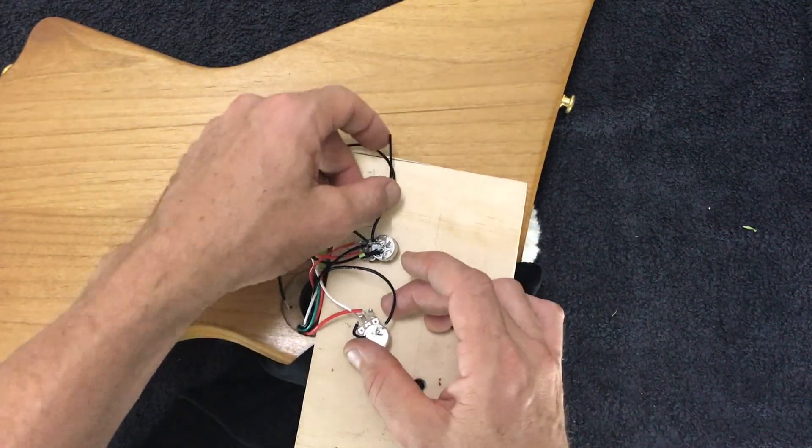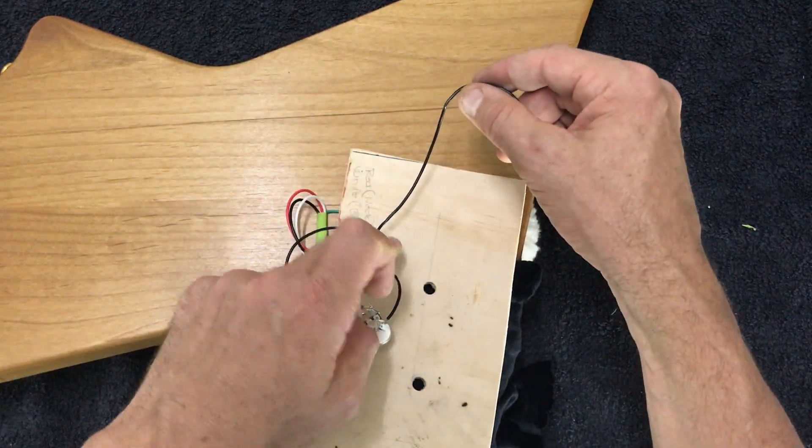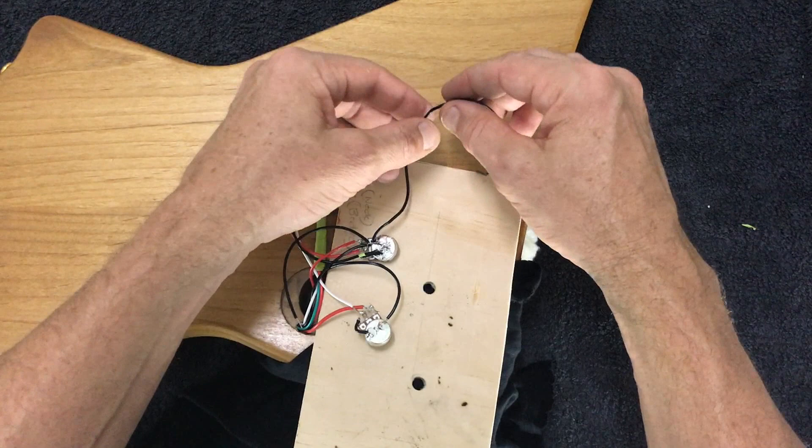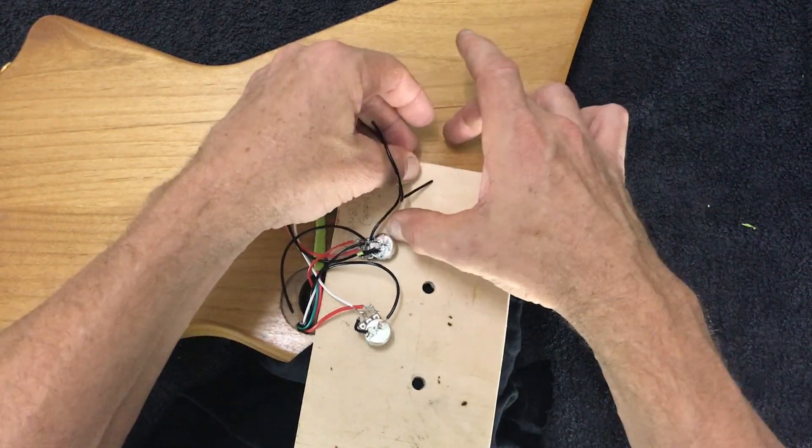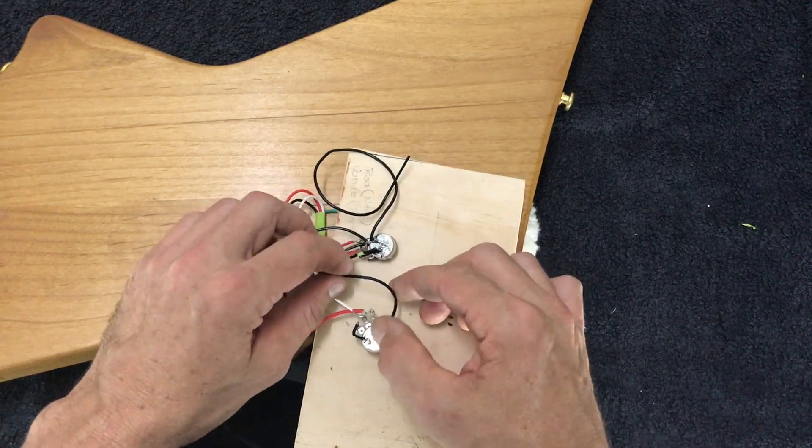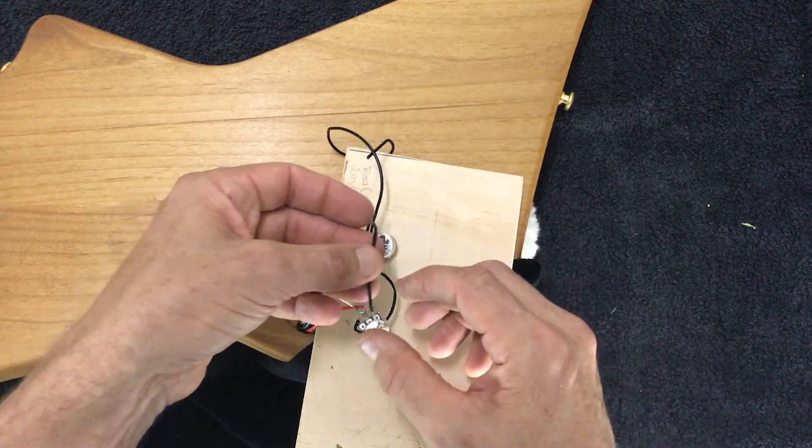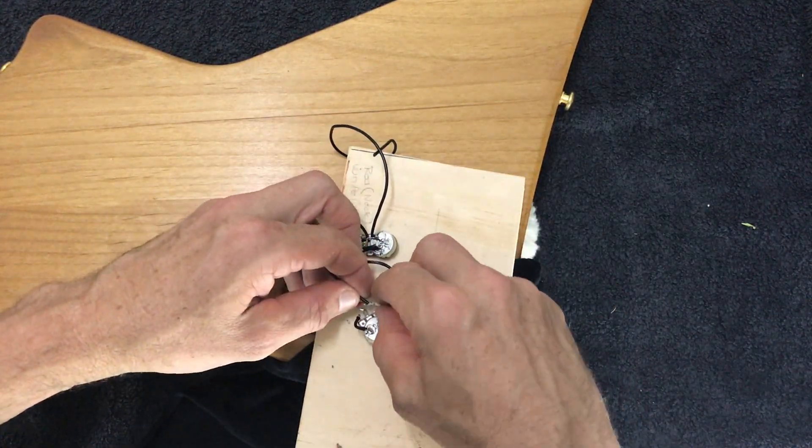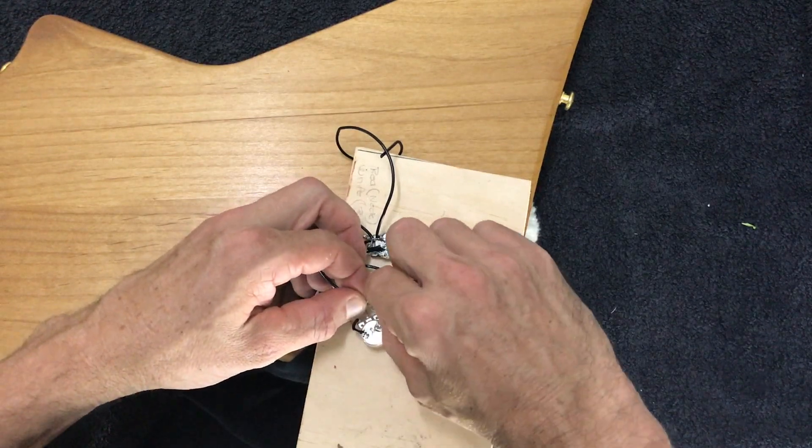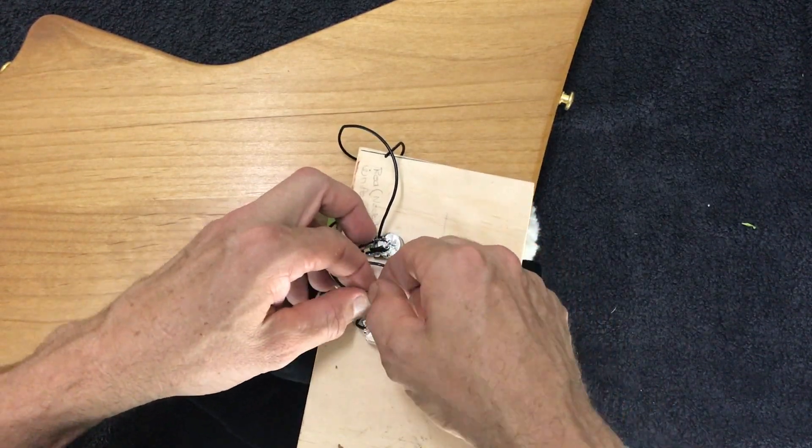I've connected my ground circuit, so this black wire I've added to the bridge volume pot will run to the tone pot. I'll cut that shorter, tidy that up a little bit, and that will then connect those two components. I will run this wire in connection with the neck pickup ground and I'll connect those both to the back of this volume pot.